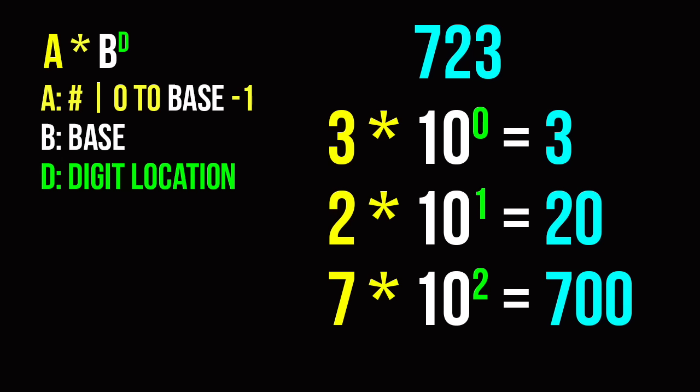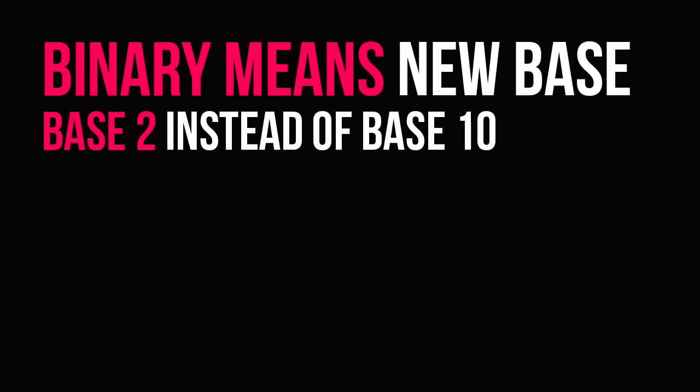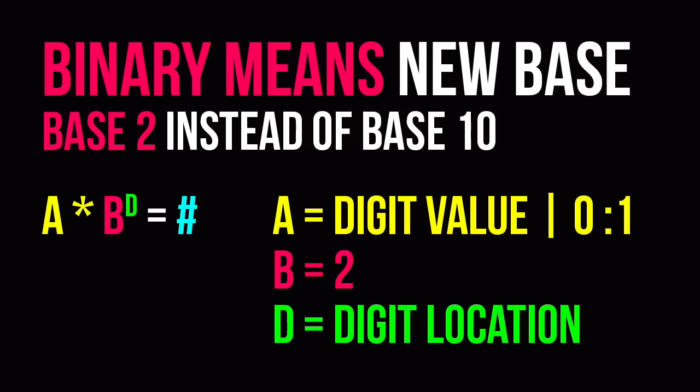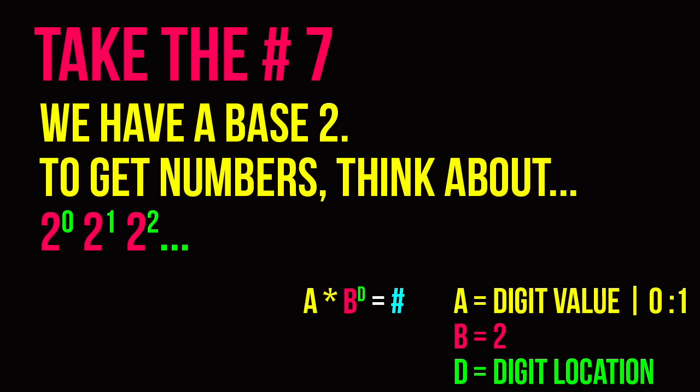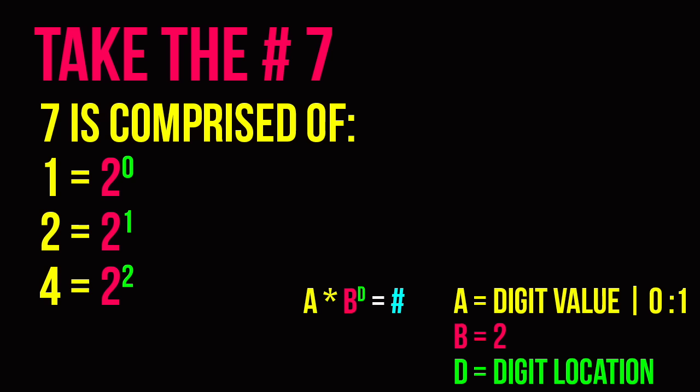I promise this will all make sense — this is a lot of math, just let it sink in. In binary, we are working with a different base: base 2, where the digits are 0 and 1. To come up with numbers, we do a value times the base to a certain power. Take the number 7 — how would we get 7 in binary? We have this base 2 and we do 2 to the 0, 2 to the 1, 2 to the 2 to get different digits. And 7 is comprised of 4, 2, and 1, each made up of a base 2 combination.